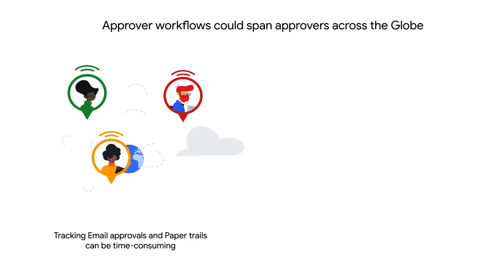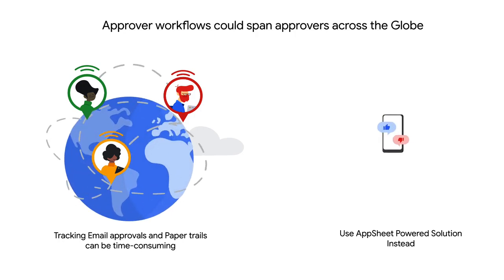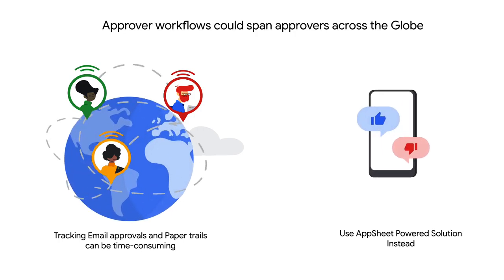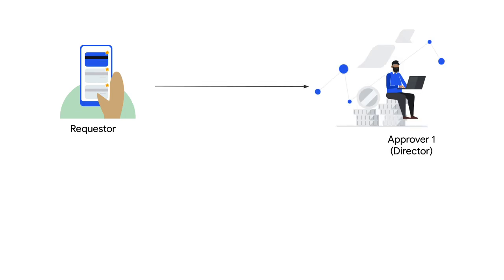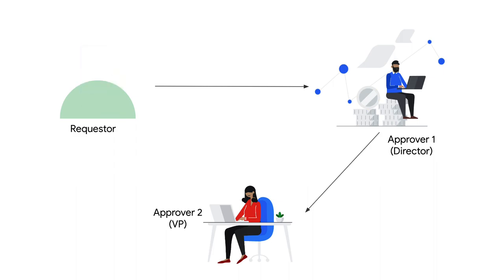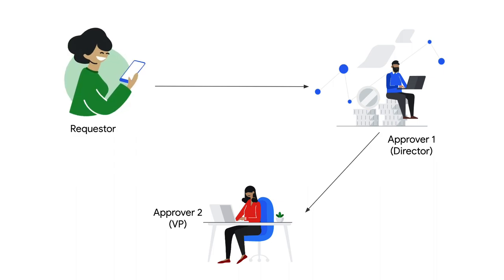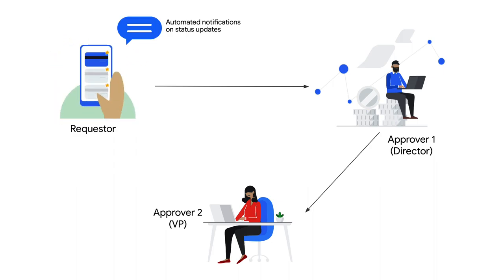Hi everyone, welcome to an AppSheet tutorial. Today we are going to build an app for travel approval. You can extend the same idea to other types of approval workflows. In this app, a requester shall be able to place a travel request which will be approved or rejected by a director. Contingent on the approval from a director, the VP will be able to approve or reject the request. The requester will get notifications with status updates.